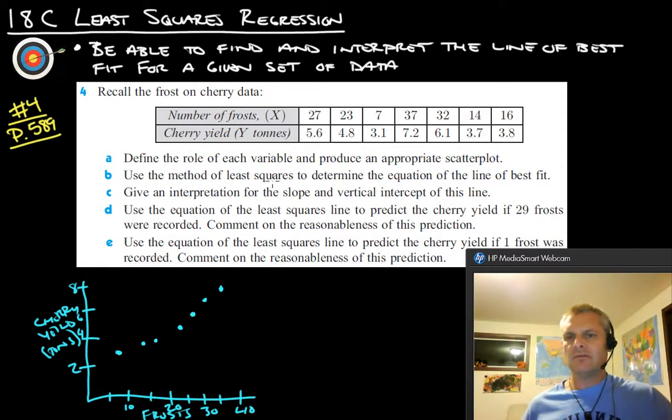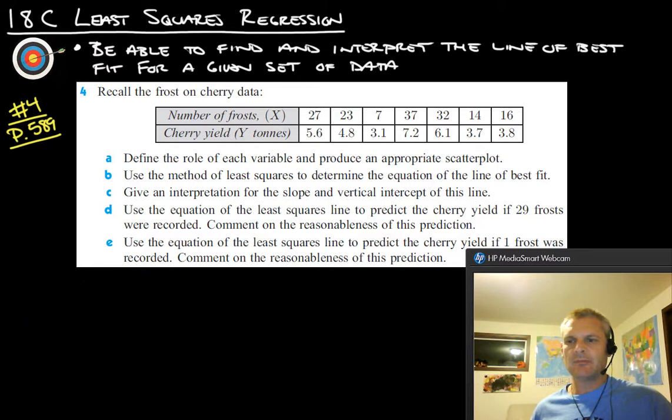So we're going to use the method of least squares to determine the equation of the line of best fit. So that's going to be part B. So this was the end of A. So now we're going to go on to try part B. So to use the method of least squares to determine the equation of the line of best fit is exactly what we were doing with our calculator before.